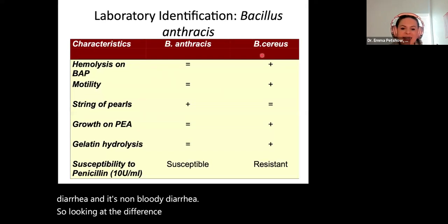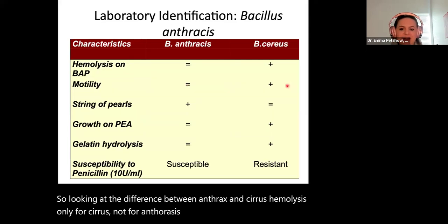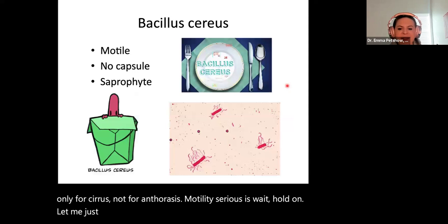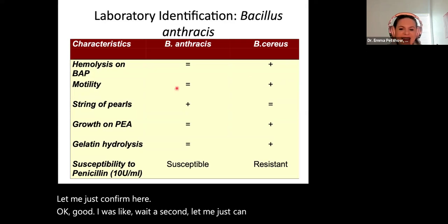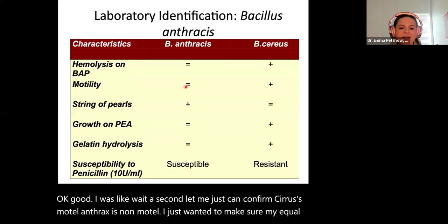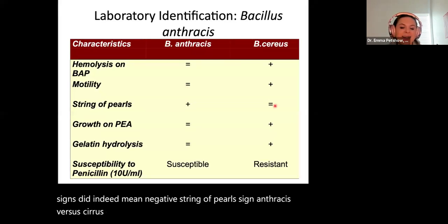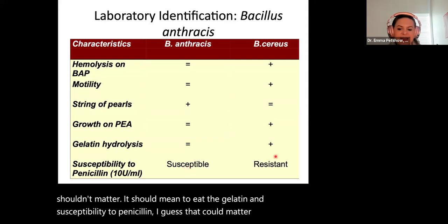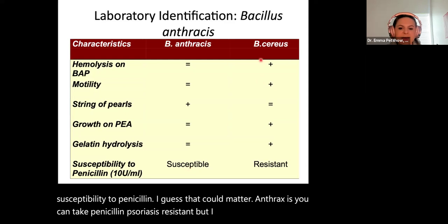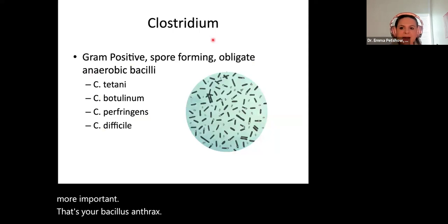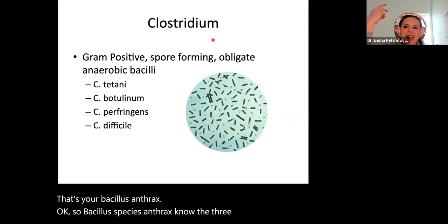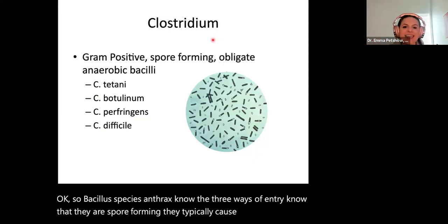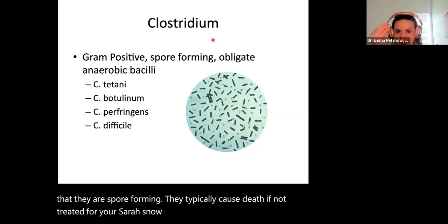Comparing anthracis and cereus: hemolysis occurs only in cereus, not anthracis. Cereus is motile; anthracis is non-motile. String of pearls sign is specific to anthracis. Anthracis is susceptible to penicillin; cereus is resistant. Key takeaways: for bacillus anthracis, know the three routes of entry, know they are spore-forming, and know they typically cause death if untreated. For bacillus cereus, know the rice gastroenteritis association.